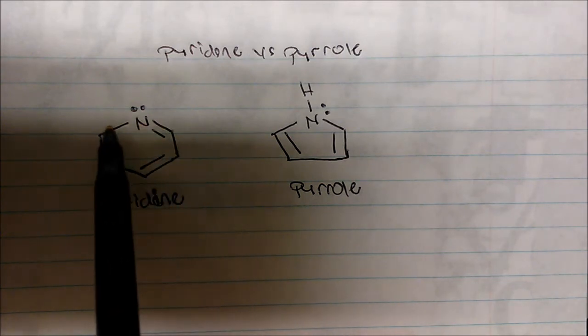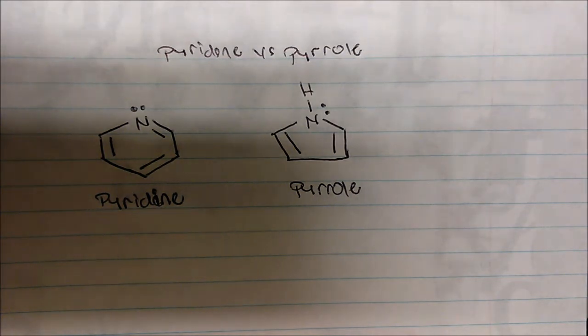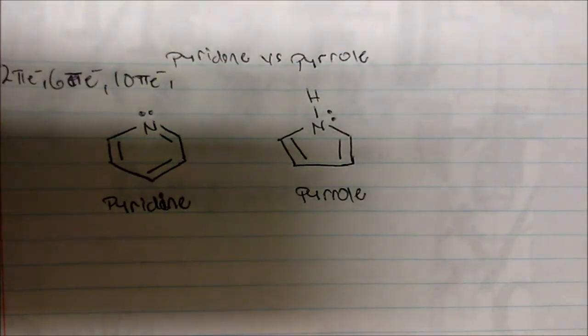From the outside you might look at this and say, well this has 2, 4, 6, 8 pi electrons — and we know 8 pi electrons does not correspond to an aromatic compound. It has to have 2 pi electrons, then we add 4 to get 6, then add 4 more to get 10, and so on. But why does pyrrole have 6 pi electrons?